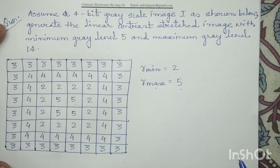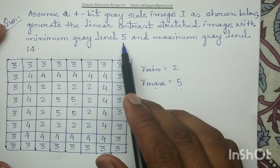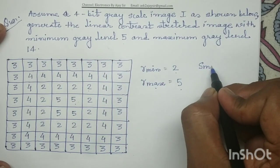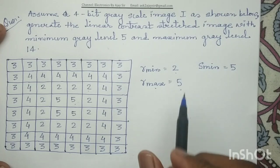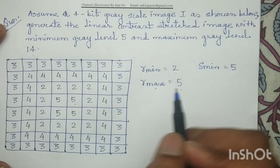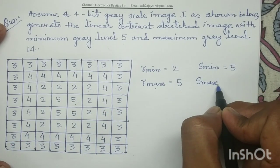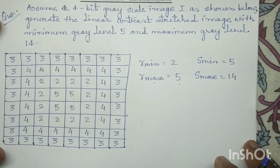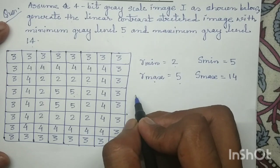Now we have to stretch this image to a new grayscale range. The minimum grayscale value of the output is given as 5, so s_min equals 5, and the maximum gray level is 14, so s_max equals 14.